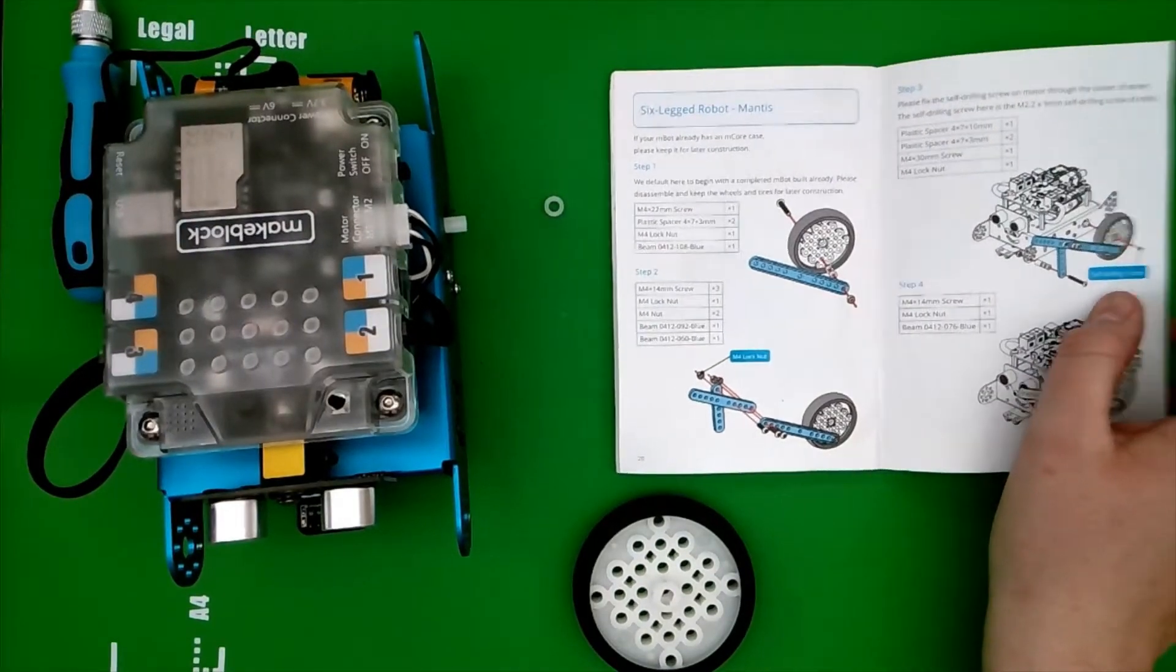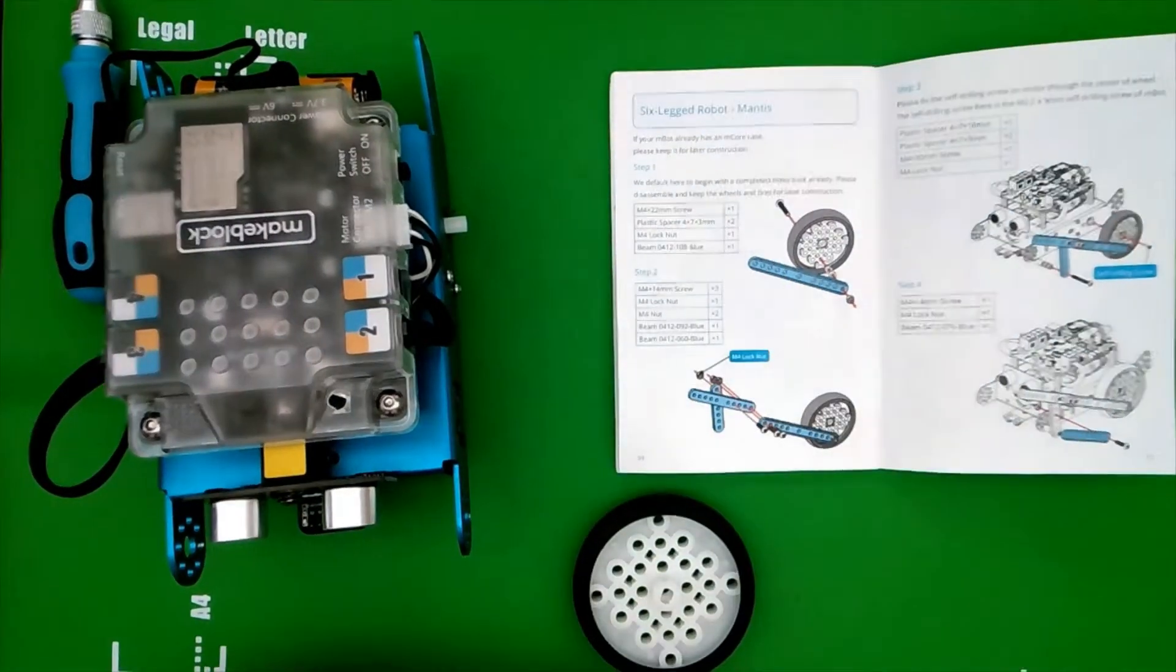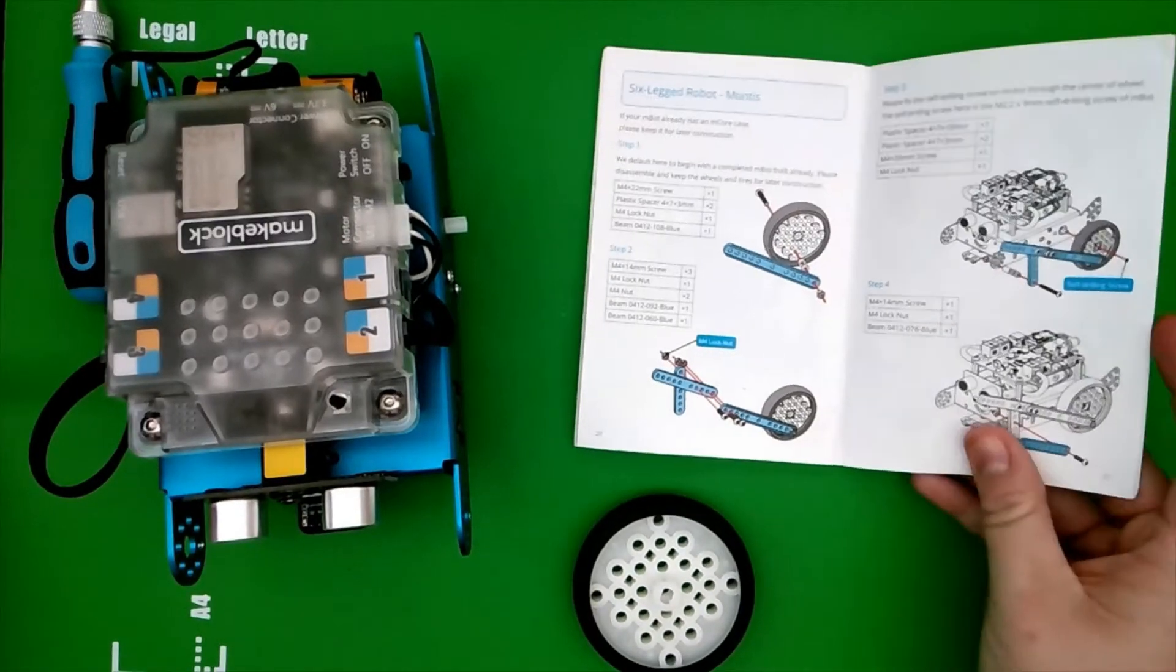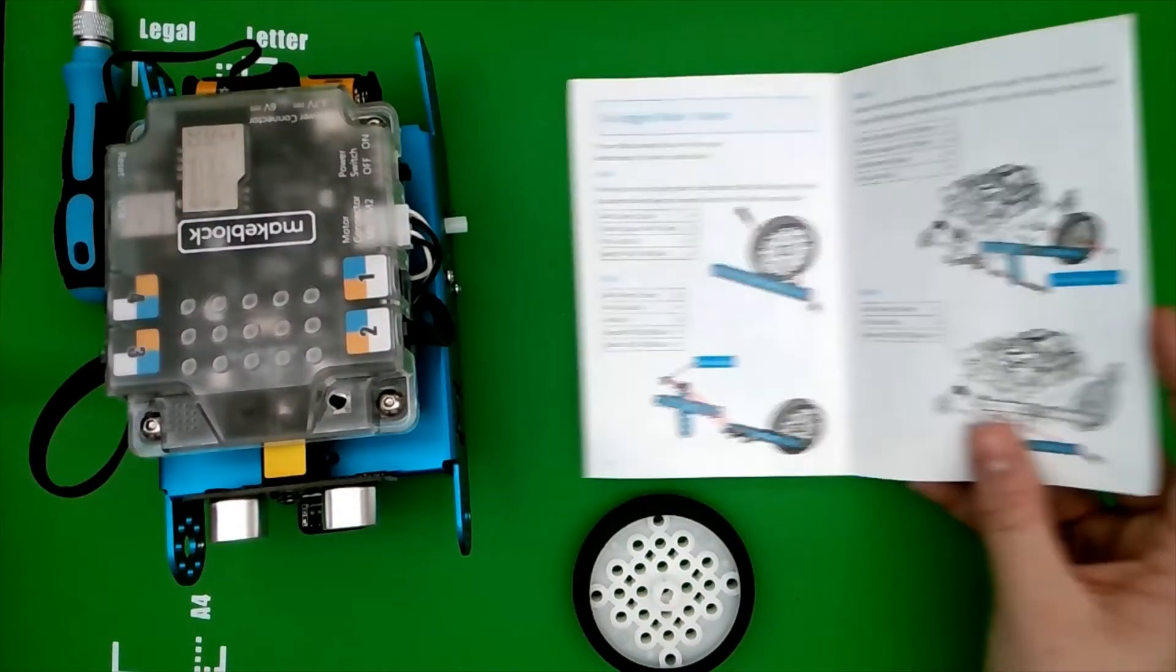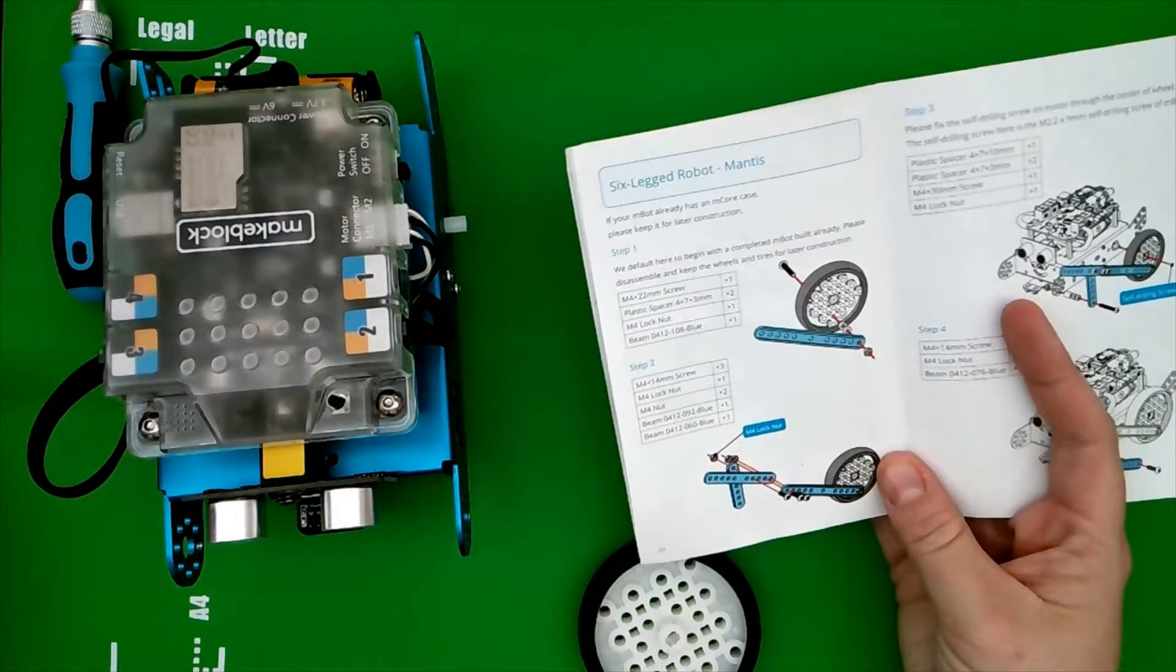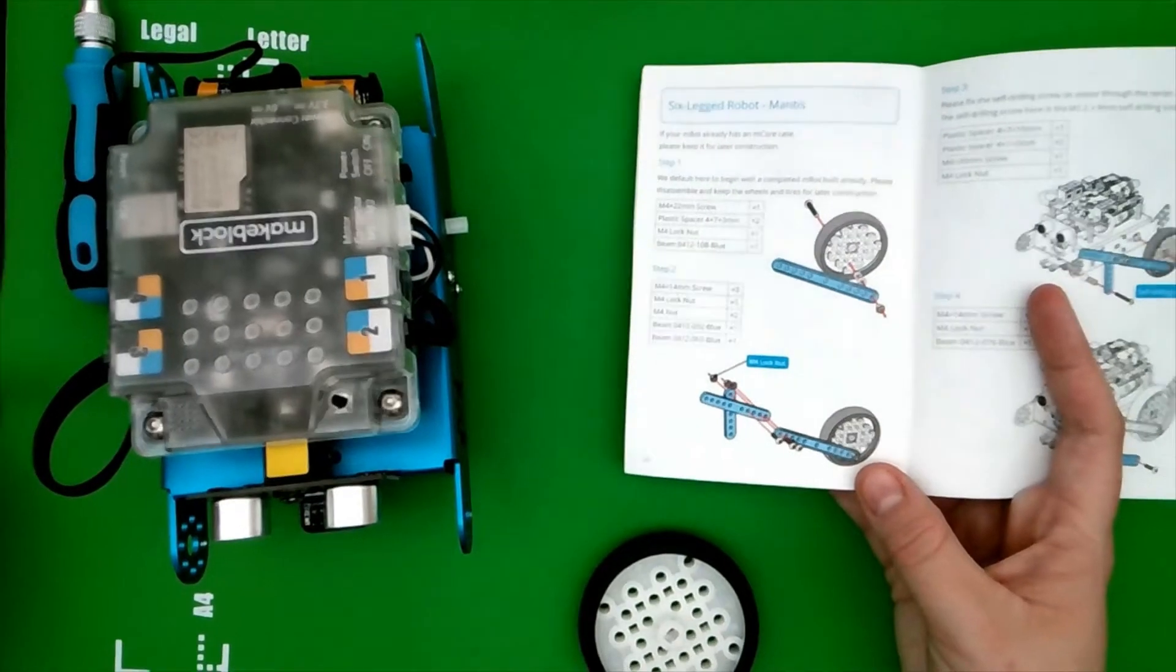Hello, I'm going to be showing you how to do the six-legged robot extension pack. This is going to be the Mantis one, and it's also in this instruction book so you can follow along with instructions as you follow along with the video.